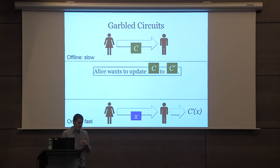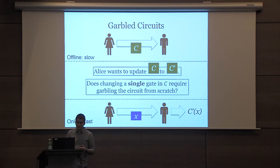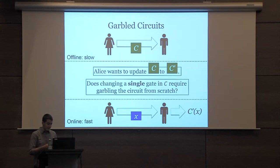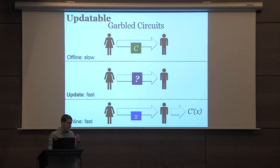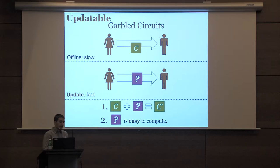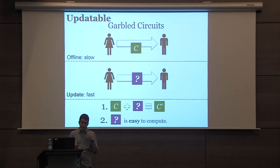If Alice wants to do this, she can just garble circuit C prime from scratch, but is there anything better? In particular, if Alice just wants to change one gate of circuit C, can she do any better than garbling the whole circuit from scratch? Does she have to spend time proportional to C? Or maybe there's some small thing — this purple thing — that Alice can send to Bob, which Bob can combine with the garbled circuit C to get garbled circuit C prime, where computing this purple thing is much easier than garbling from scratch. We call this an updatable garbled circuit.